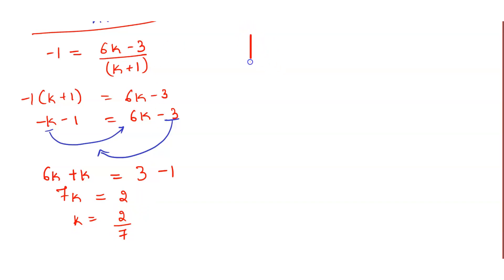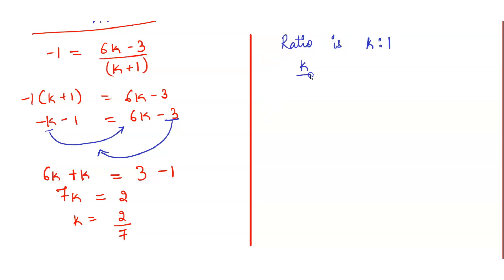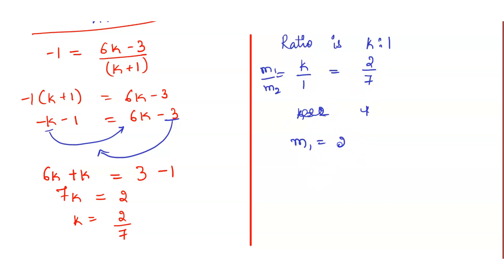The ratio is k to 1, which equals 2/7 to 1. So m1 upon m2 equals k upon 1, which is 2 by 7. Therefore m1 = 2 and m2 = 7. The ratio is 2:7. Hope you are understanding, friends.